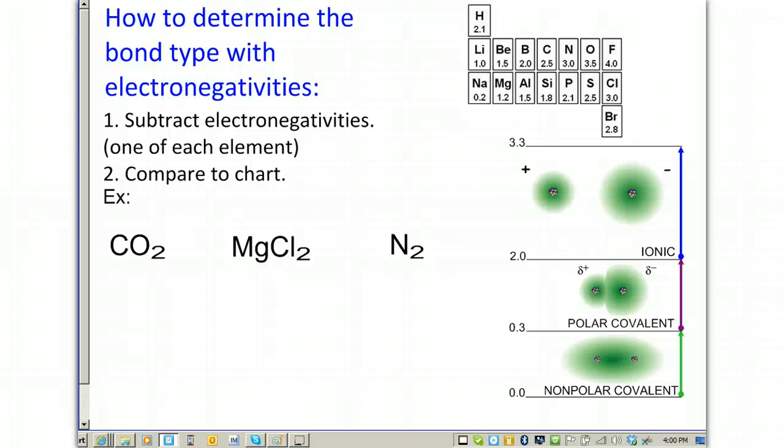How are you going to determine bond type with electronegativities? Here's how we do it. First, you're going to subtract the electronegativities of one of each element. We're just trying to determine how are the electrons being shared or transferred in one bond between two atoms. We're going to use the chart of electronegativity values. And in the classroom, you have a chart on the back of your periodic table that gives you these values.